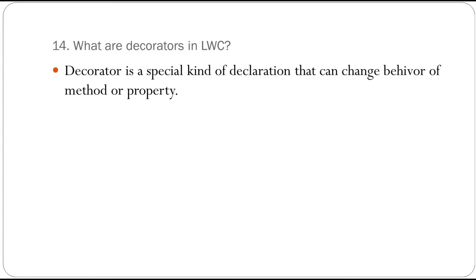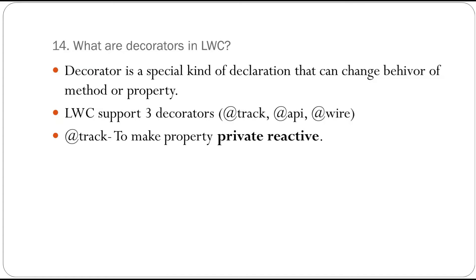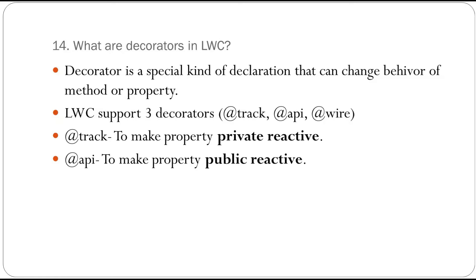Next: what are decorators in LWC? A decorator is a special kind of declaration that can change the behavior of a method or property. In LWC we have three decorators: track, API, and wire. track is used to make private properties reactive — when the property value changes, the UI re-renders automatically. API is used to create public reactive properties that can be set from a parent component or from outside the component.